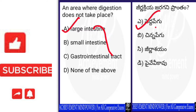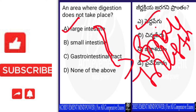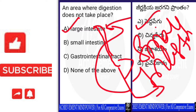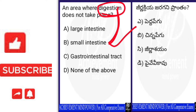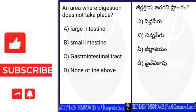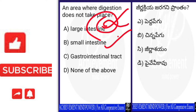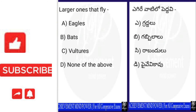Digestion takes place in the small intestine. In the large intestine, digestion does not take place — it stores waste materials. So the right answer is A — Large intestine. Digestion does not occur in the large intestine; it is not a site for digestion but for storage.